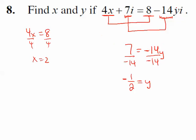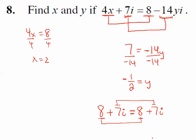Let's verify: plug in x = 2, and y = negative one half. 4 times 2 is 8, plus 7i on the left. On the right, negative 14 times negative one half is 7, so we get 8 + 7i. Yes, they're equal — the real part equals the real part, and the imaginary part equals the imaginary part. A complex number is made up of two parts, and both parts must be equal.